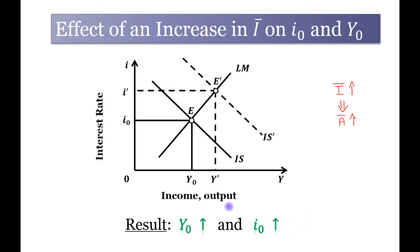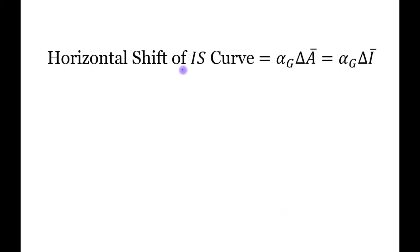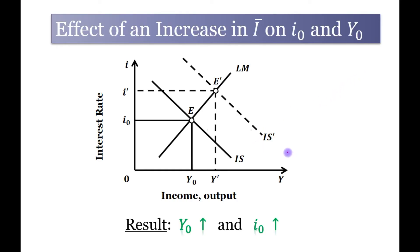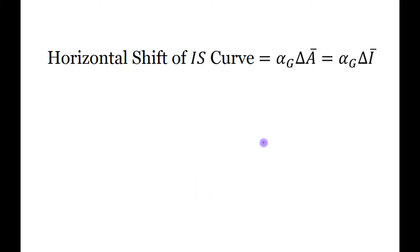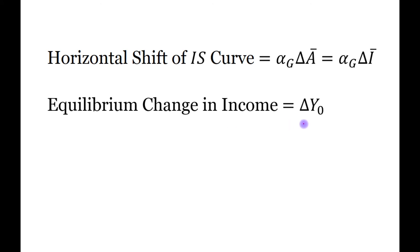The horizontal shift of the IS curve is equal to the multiplier times the change in autonomous spending. In our case, autonomous spending equals investment spending, so we can write it as: the horizontal shift of IS curve equals the multiplier times the change in autonomous investment spending. This horizontal shift of the IS curve would equal the change in equilibrium income, ΔY₀.